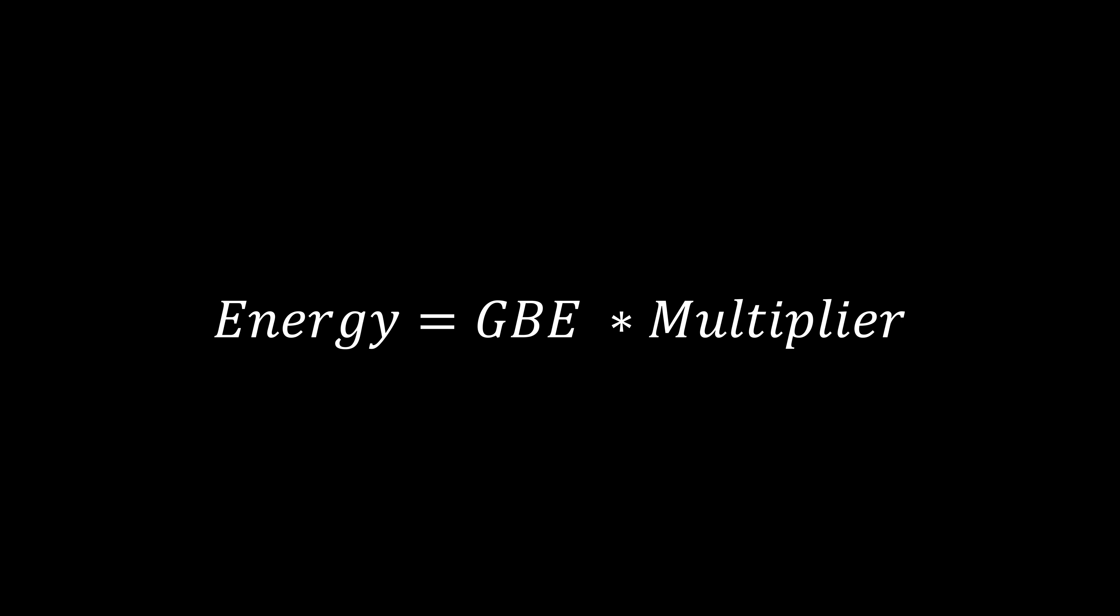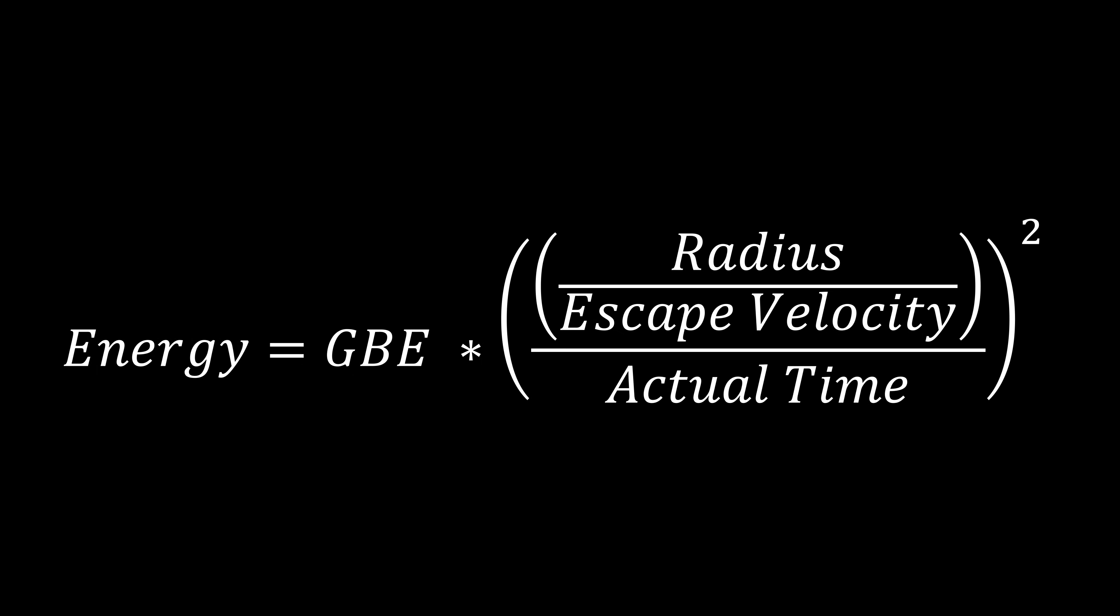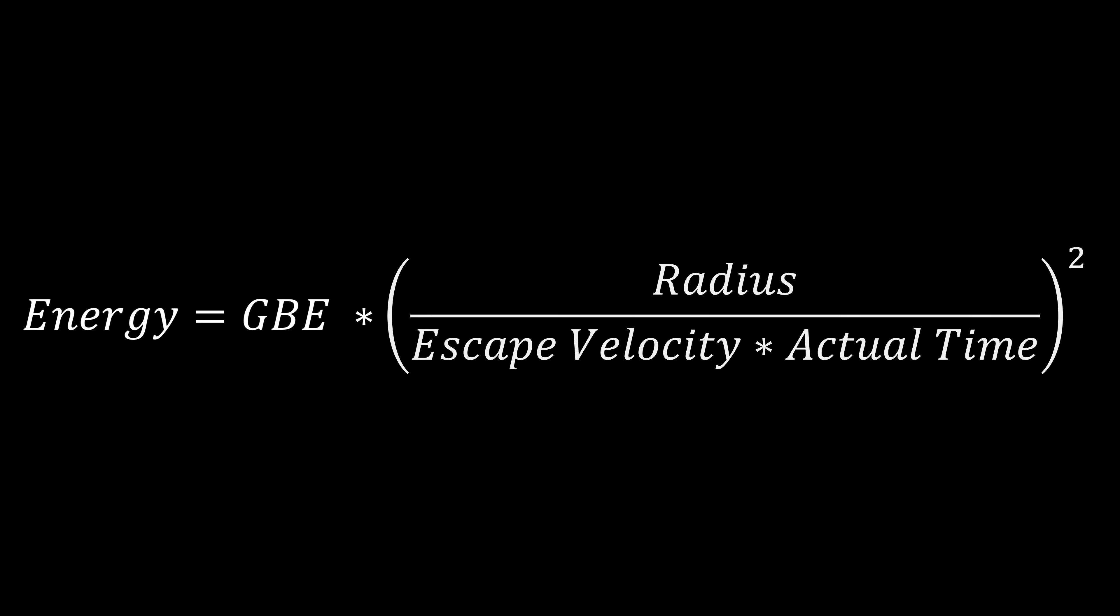For those of you who prefer it as an equation instead of a set of steps for instructions, look at it as the energy equals the gravitational binding energy times our multiplier. Remembering that our multiplier was our time difference squared. If you recall, that time difference was actually the normal time divided by the actual time. And of course, the normal time was the radius divided by the escape velocity, while the actual time was literally what you recorded. And of course, simplifying that gets that final equation that looks much nicer and is much easier to use if you wanted to work this out for yourself.